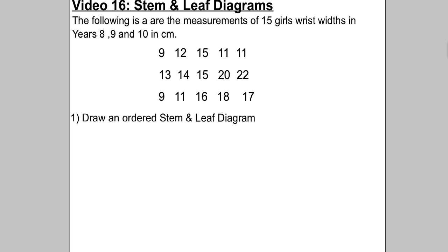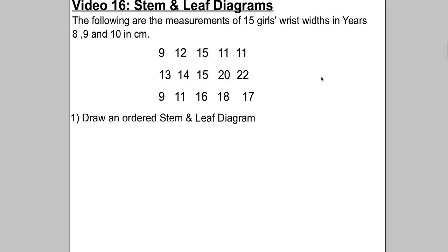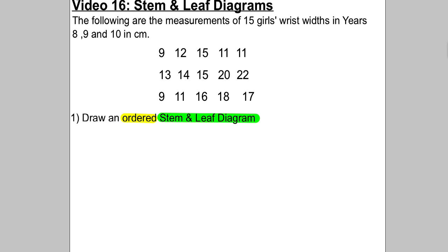So this is stem and leaf diagrams and we'll do it via a question. The following are the measurements of 15 girls' wrist widths in year 8, 9 and 10 in centimetres. And it asks you to draw an ordered stem and leaf diagram. Be careful to read that it's ordered — the data has got to be in order in your stem and leaf diagram. This is usually three marks — I'll show you how to get all three.